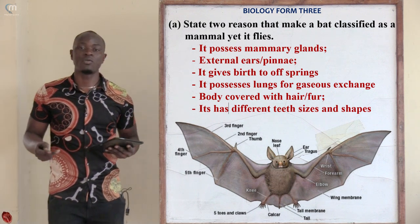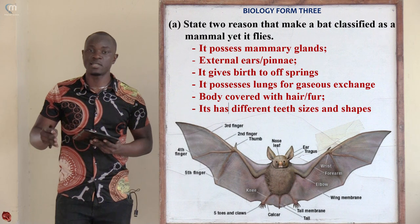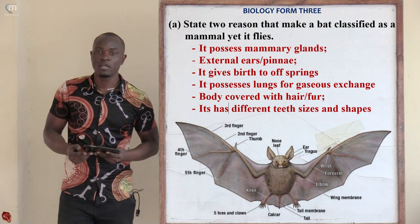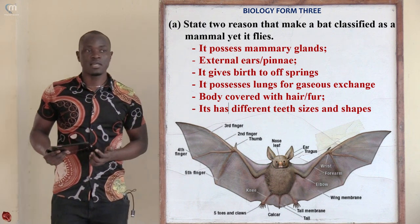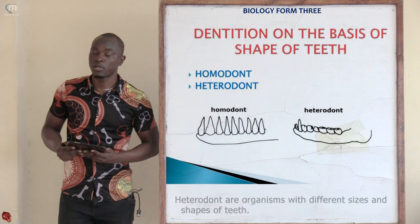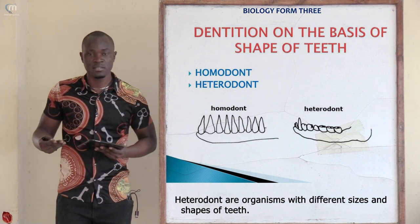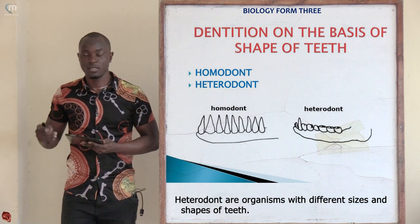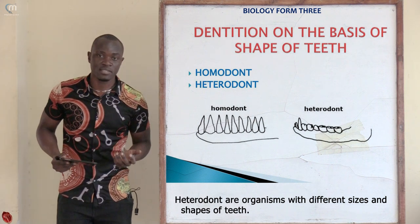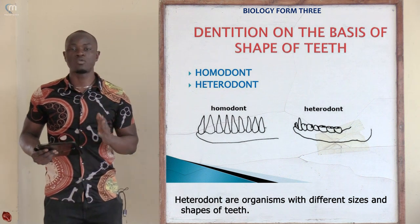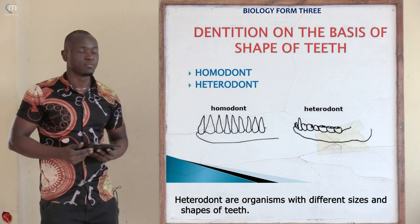The bat gives birth to live offspring — it doesn't lay eggs that hatch. Another reason is that the bat is a heterodont, meaning it possesses teeth of different sizes and shapes. It is only mammals that possess different sizes and shapes of teeth, making them heterodonts.